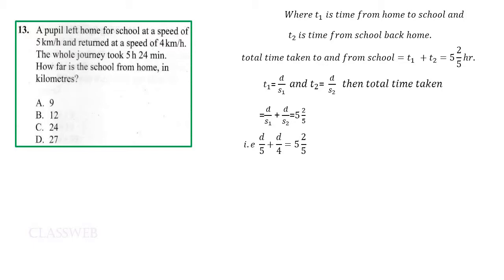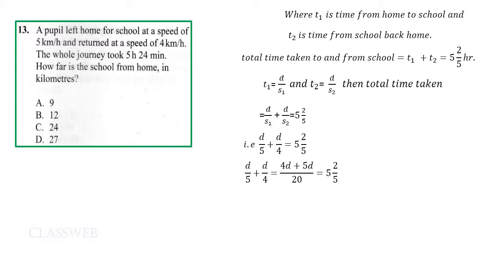This can be added like any fraction with an unknown by finding the LCM of 5 and 4, which is 20. Taking 20 divided by 5 gives 4, multiplied by d gives 4d. Taking 20 divided by 4 gives 5, multiplied by d gives 5d. This now equals five and two-fifths.